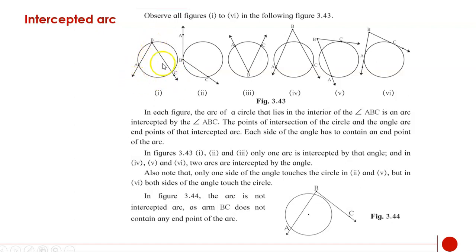Both arms of the angle touch the arc. In figure 3.43, figures 1, 2 and 3, only one arc is intercepted by that angle. But in figures 4, 5 and 6, two arcs are intercepted by the angle. These are various possibilities. Also note that only one side of the angle touches the circle in figures 2 and 5.